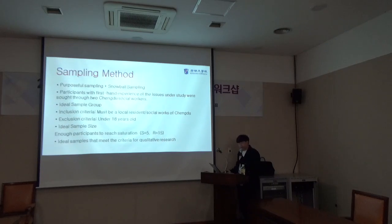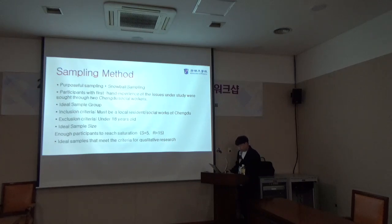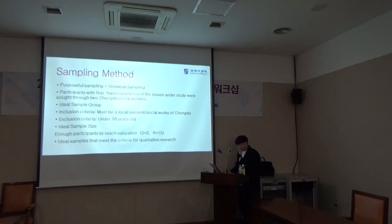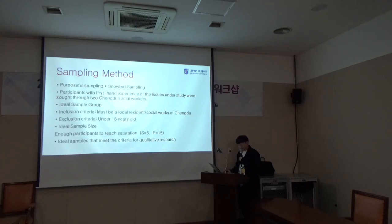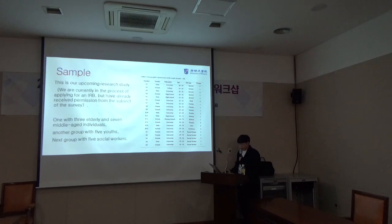For sampling methods, we use purposive sampling and snowball sampling. Participants with first-hand experience of the issue under study were selected, choosing Chengdu social workers. Inclusion criteria require participants to be a local care resource or social worker in Chengdu. Exclusion criteria include being under 18 years old. The ideal sample size consists of five social workers and fifteen residents. This sample size is appropriate for qualitative research. This is an upcoming research study and we are in the process of applying for IRB approval.